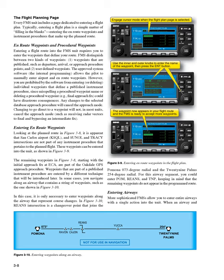Waypoints that are part of a published instrument procedure are entered by a different technique that will be introduced later. In some cases, you navigate along an airway that contains a string of waypoints. In this case, it is only necessary to enter waypoints along the airway that represent course changes. For this airway segment, you could enter POM, REINS, and TNP, keeping in mind that the remaining waypoints do not appear in the programmed route.